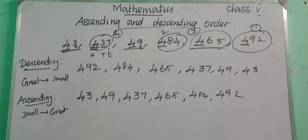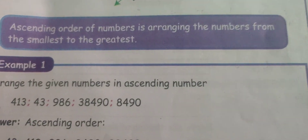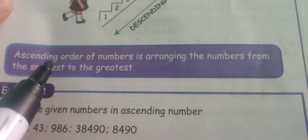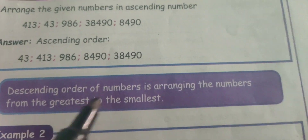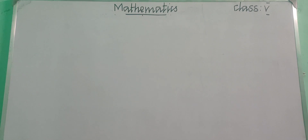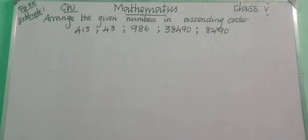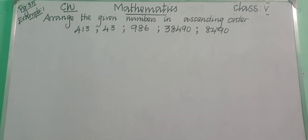Very easy! Now let us write the class work. Take your class work notebook. Ascending order of a number is arranging the numbers from the smallest to the greatest. Descending order means arranging the numbers from greatest to smallest. You can see the sum on page number 35, example 1. Write this question: arrange the given numbers in ascending order.